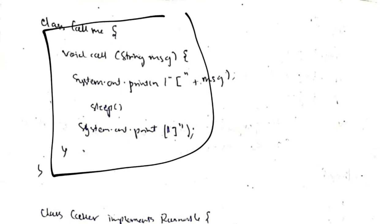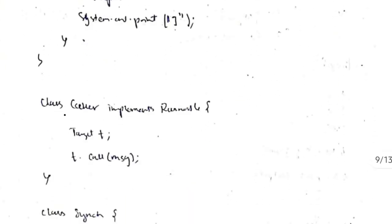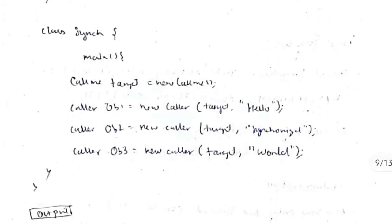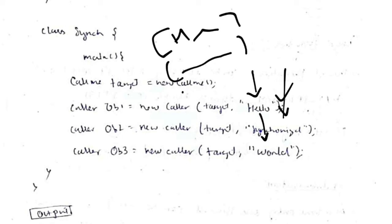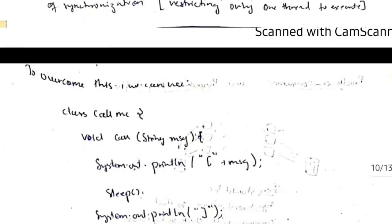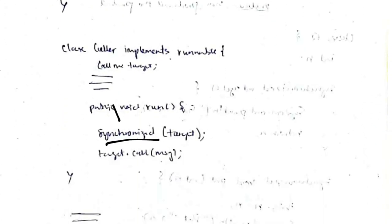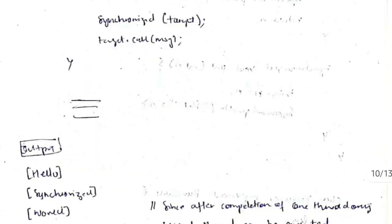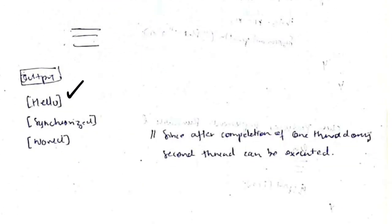The second class, Caller, implements Runnable and creates a thread that calls the callme message. In the main function, three threads — 'hello', 'synchronized', and 'world' — are created and run simultaneously. Without synchronization, the outputs mix together. To fix this, we add the keyword 'synchronized' before the method, which ensures each thread completes its call in order: first 'hello', then 'synchronized', then 'world'.